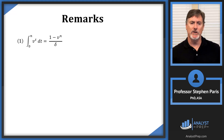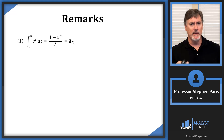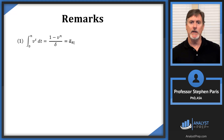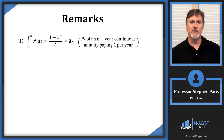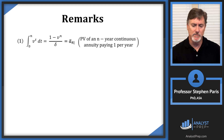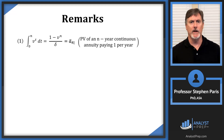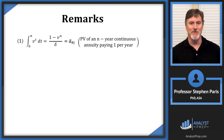Symbolically, ā_angle_N is the present value of an N-year continuous annuity that pays 1 per year, with the 1 being paid continuously throughout the year. This has more theoretical value than practical value — you're not actually going to be able to pay 1 continuously throughout the year — but it's a very useful concept.